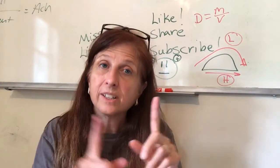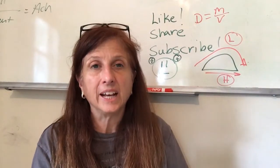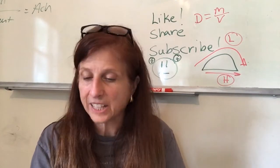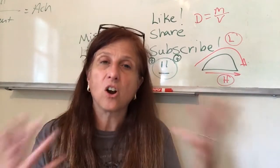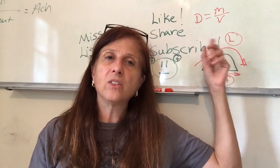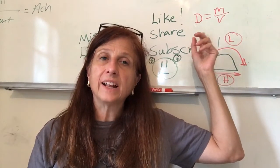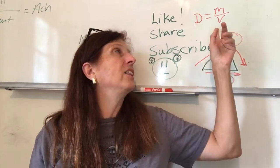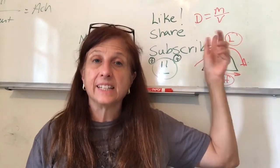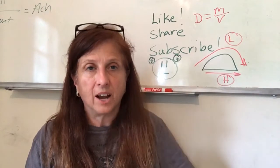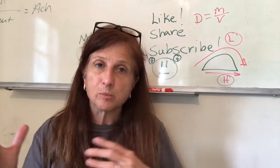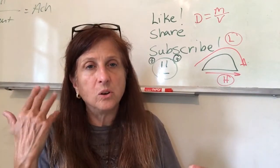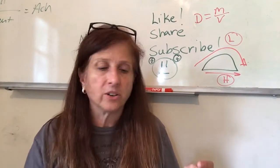According to legend, it turned out the crown was not gold, and I think the crown maker was killed because he tried to rip off the king. So this is called Archimedes' principle — you can find the density by water displacement. The density is a physical property of the substance, and every substance has its own density, just like things have their own specific heat that we learned about before.